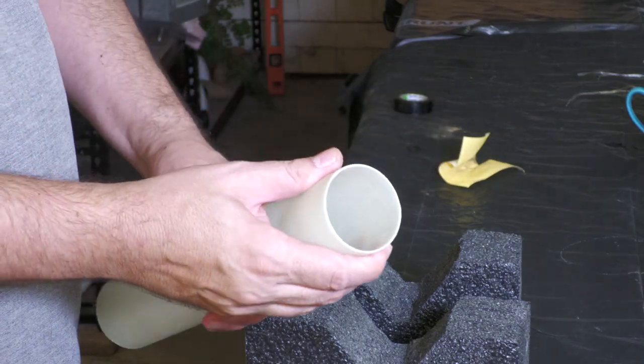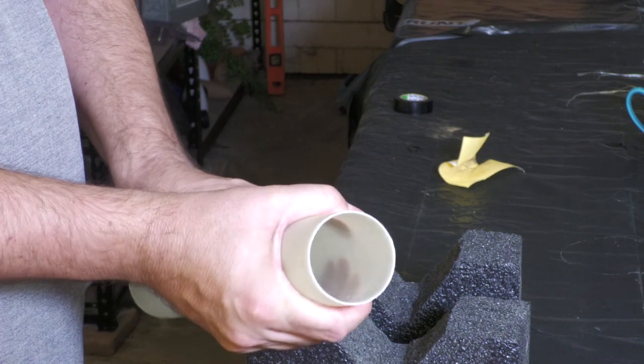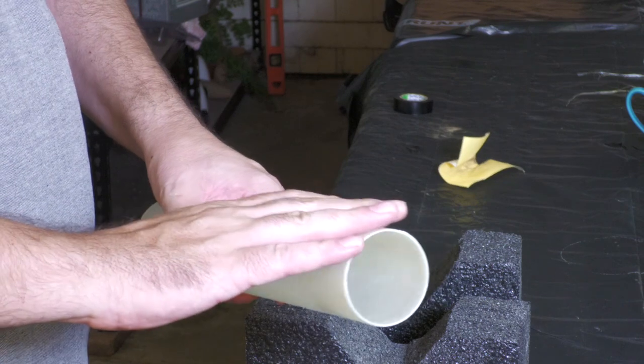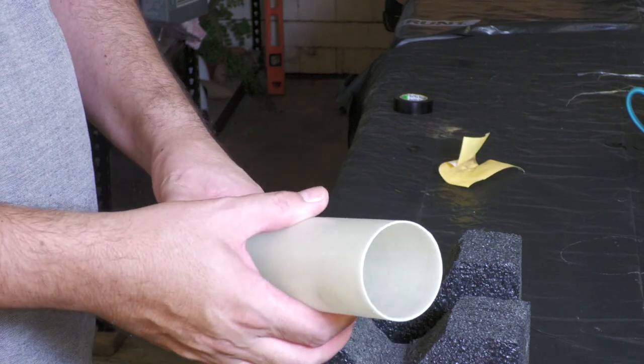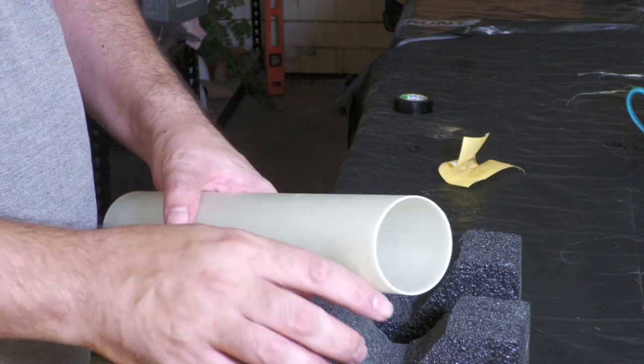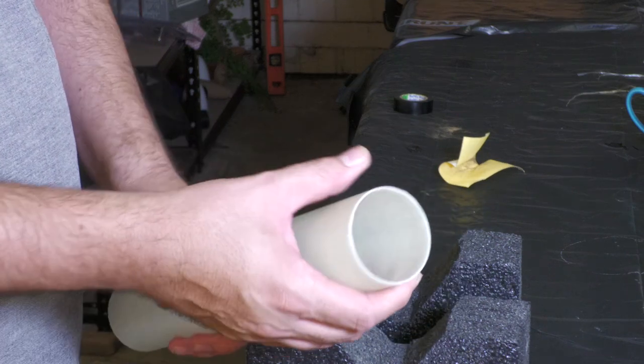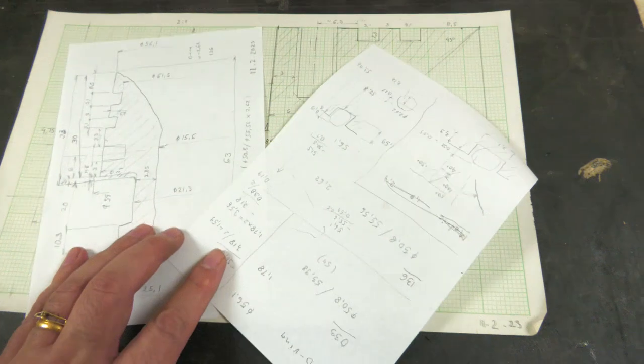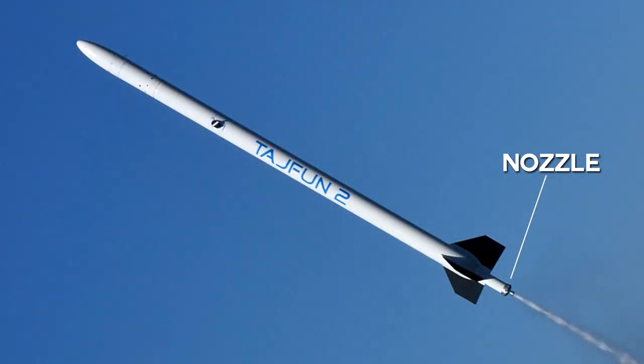So the motor mount tube feels pretty strong. I think that'll be fine. It's going to have one more layer put on it over the top, and then even a thinner fiberglass over the top of that as well, so that'll be fairly strong. Now that we have the motor mount tube and we know its exact internal dimensions, we can make the nozzle that will fit into it.